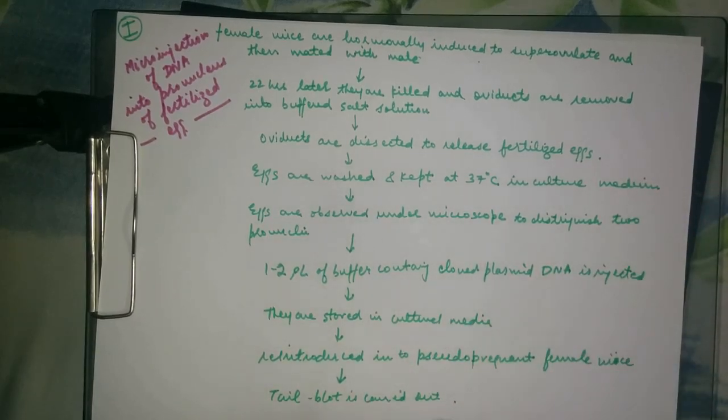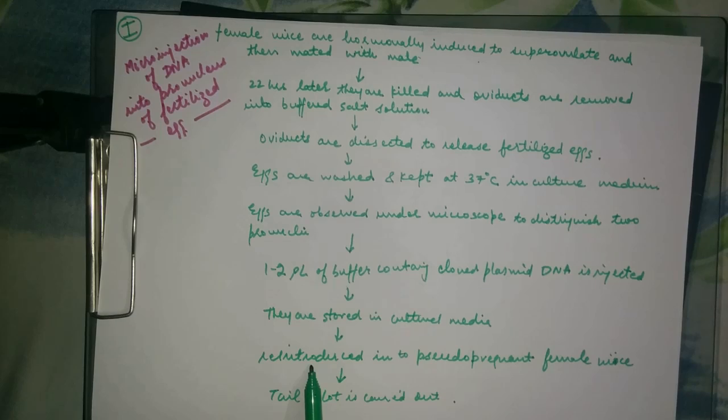By injection, 40 to 60 eggs are injected in one hour, and then they are stored in cultured media. Many of the eggs die because obviously every cell is not going to get the DNA.